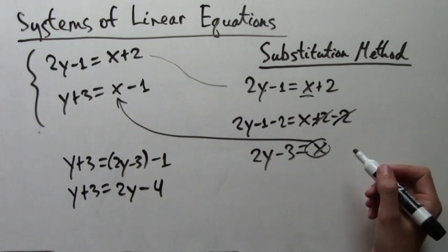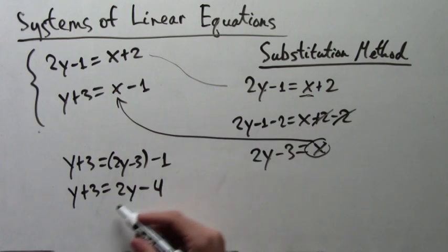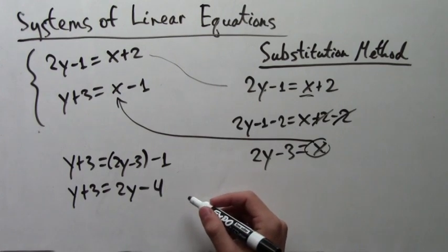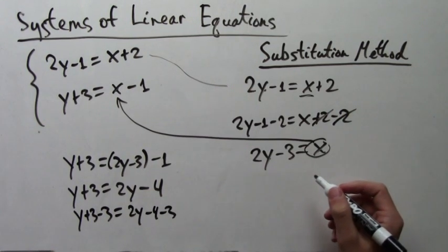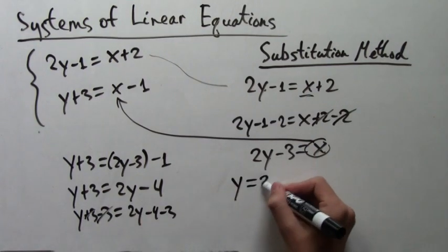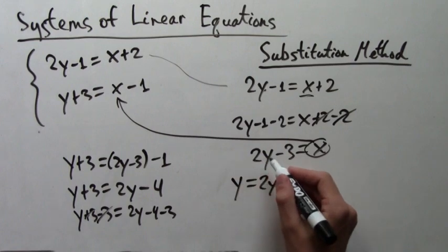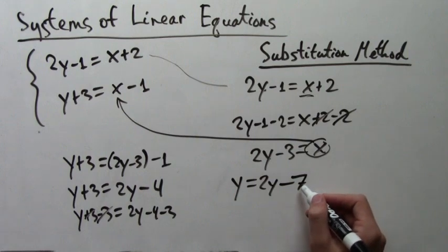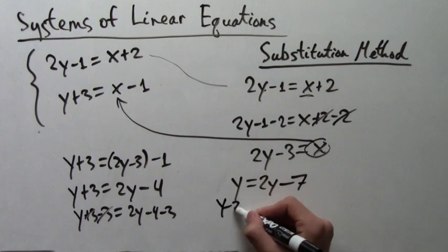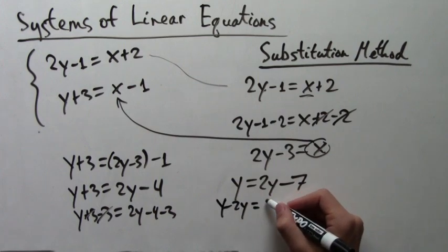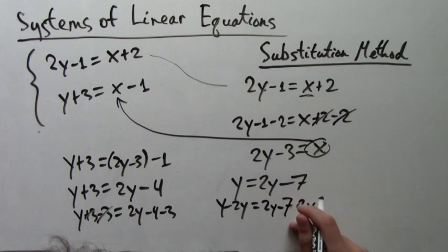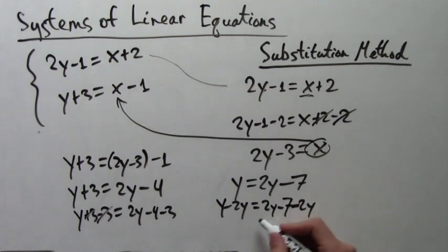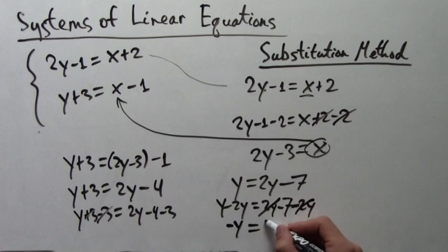So for a start, we're going to subtract 3 on both sides. So our equation is going to simplify to just y equals 2y minus 7. So now we want all the y's on one side of the equation. So we subtract 2y on both sides and we get y minus 2y is equal to 2y minus 7 minus 2y. And of course this is going to simplify to just negative y equals negative 7. So that means that y equals 7.